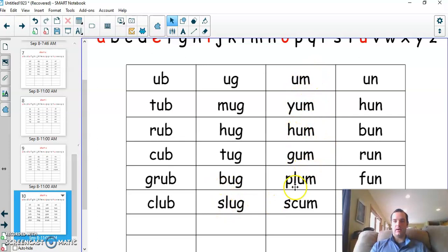U-m ending. Yum, hum, gum, plum, scum. Then U-n ending. Hun, bun, run, fun. And lastly, sun.